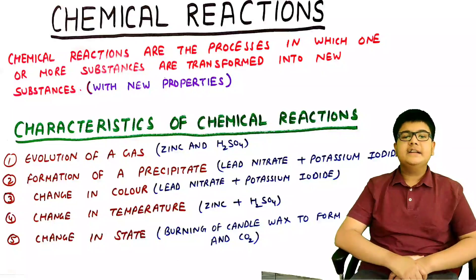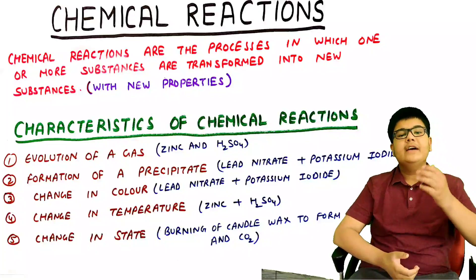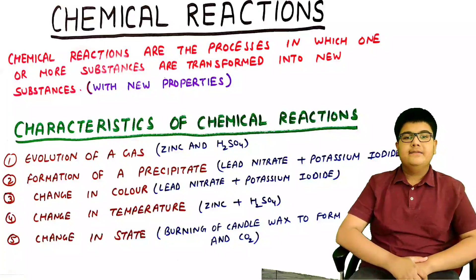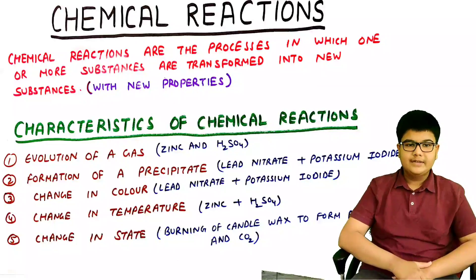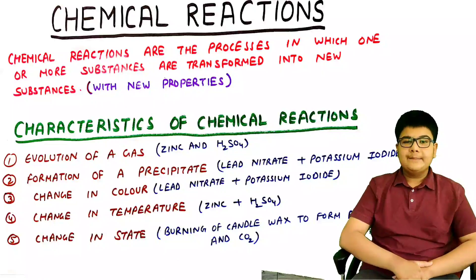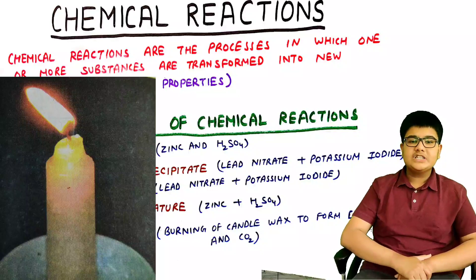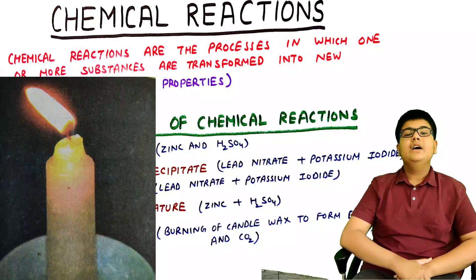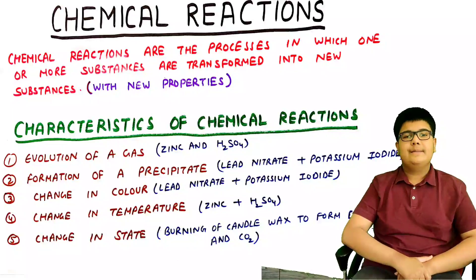Third, a change in color can also take place. Fourth, a change in temperature — the temperature of the solution can also change after a chemical reaction. For example, in the reaction of zinc and sulfuric acid, when we touch the side of the flask we observe that it is a little hot. Fifth, change in state — for example, burning of candle wax. The candle wax which is a solid burns to form water which is liquid and carbon dioxide which is a gas.